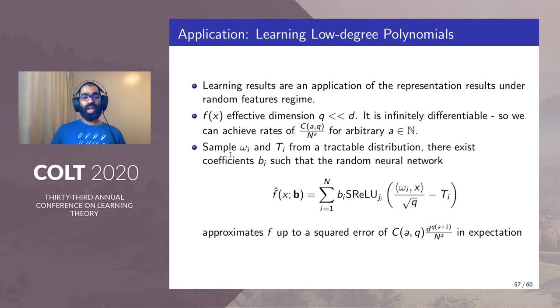We sample w_i and t_i from a tractable distribution which is agnostic to the function being represented and show that there exists coefficients b_i such that the random neural network approximates the given polynomial f up to the following error which scales as 1/n^a in expectation.